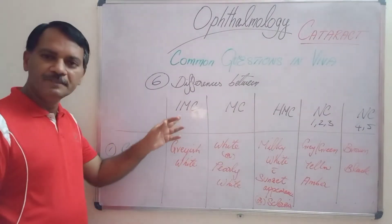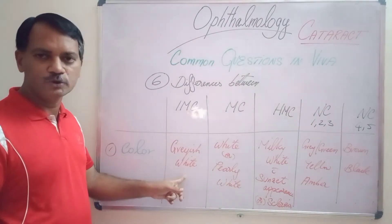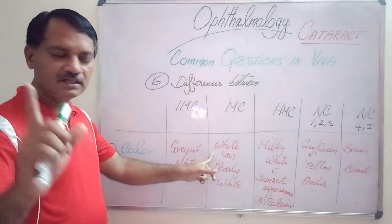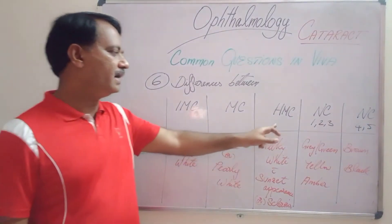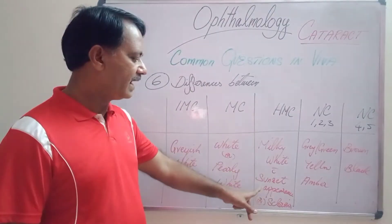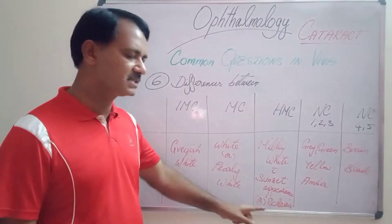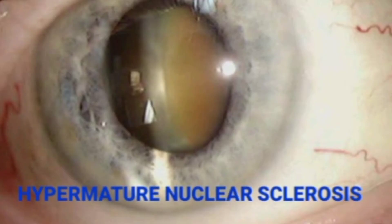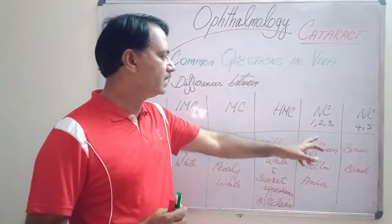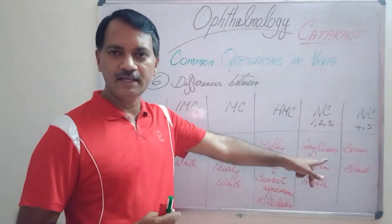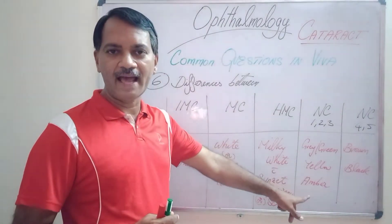The first difference we are going to discuss is the colour of the lens. In immature cortical cataract, the colour of the lens will be greyish white. In mature cataract, the lens will be white or pearly white in colour. In hypermature cataract, the lens will be milky white in colour, and it may have a sunset appearance or there may be sclerosis. In nuclear cataract grade 1, 2 and 3, the lens may be grey, green, yellow, or amber in colour.